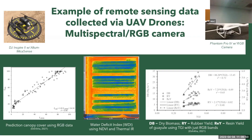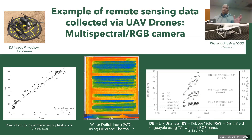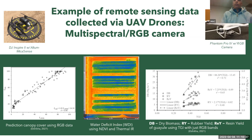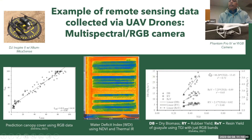Remote sensing using drones can also improve irrigation management. Drones carrying RGB cameras are used to evaluate canopy cover, while drones with multi-spectral sensors including a thermal band are used to calculate the Water Deficit Index — an image showing areas receiving more water in blue/purple and areas receiving less in yellow/orange. These tools can also predict final yield, as demonstrated for Guayule, a shrub grown to produce rubber.